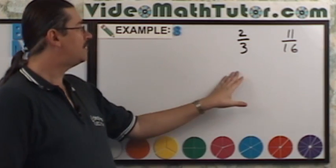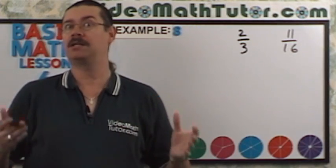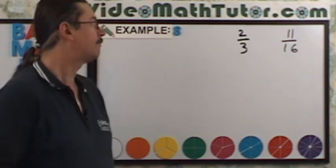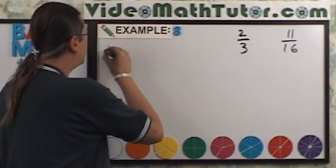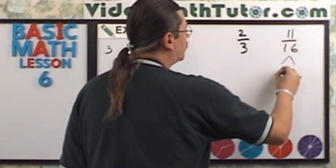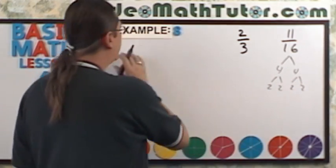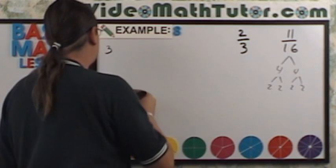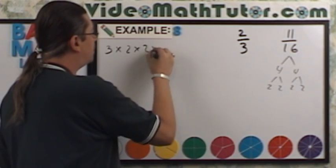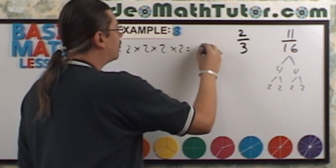Example 8 asks which of these two fractions is smaller: 2 thirds or 11 sixteenths? Let's find the LCM. 3 is prime, so 3 is part of the answer. 16 breaks up into 4 times 4, then 2 times 2, 2 times 2. They don't have anything in common, so we multiply all together: 3 times 2 times 2 times 2 times 2, which gives us 48.